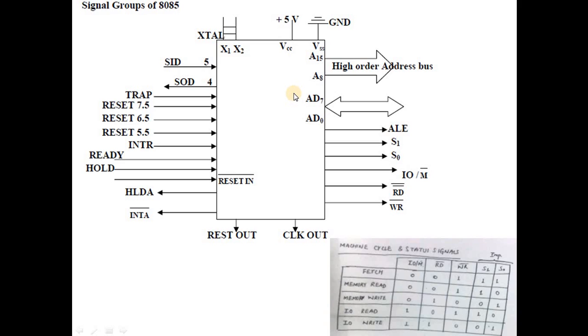The first category is interrupt and external signals, serial input data, frequency signals, supply signals, address signals, data bus signals, address enable, and control signals including IO/M bar, read bar, and write bar.